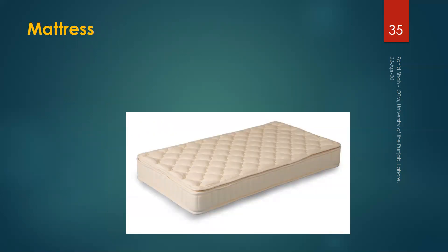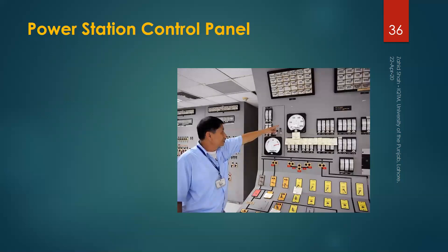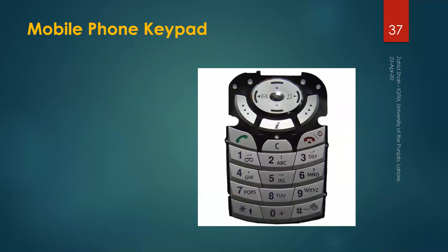Another product is a mattress — a commonly used product. What are the important dimensions of the mattress and the relevant anthropometric variables? An industrial product is a power station control panel — list the important dimensions that must be considered and the corresponding anthropometric variables. Finally, there is a mobile phone keyboard — identify the important dimensions and relevant anthropometric variables. List both things for all these products and try to think slightly out of the box. We will discuss them during the question and answer session.